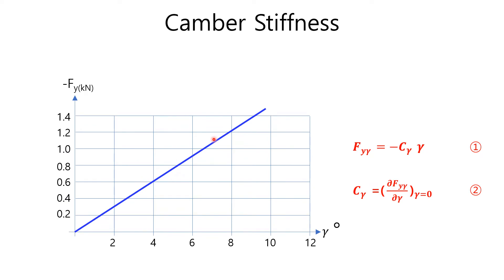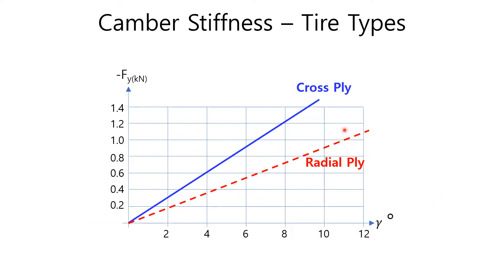As described in equation number 2, the camber stiffness is defined as the slope at the origin, where the camber angle is equal to zero. Camber stiffness differs depending on tire structures. Radial tires usually produce lesser camber thrust and moment than cross-ply ones because radial tires have a more flexible carcass compared with cross-ply tires.